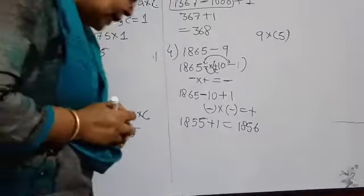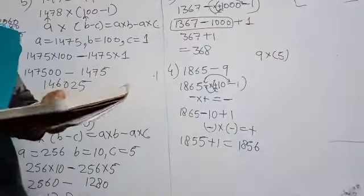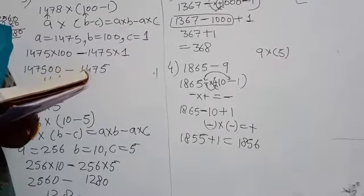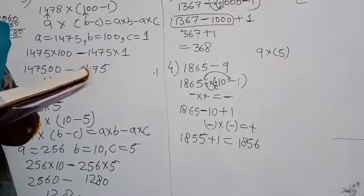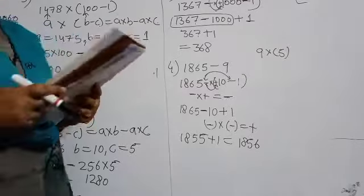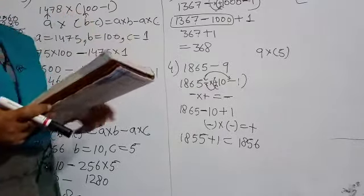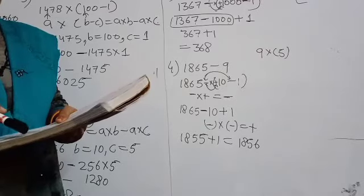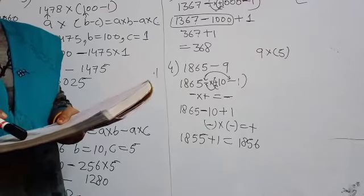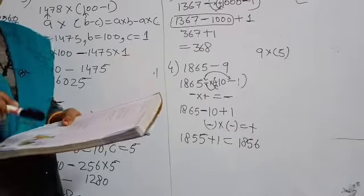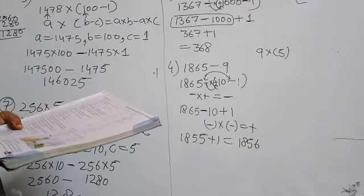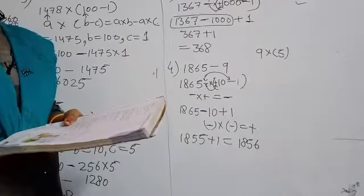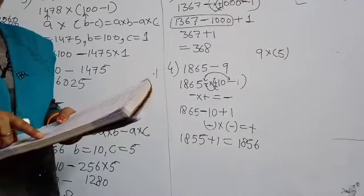I am guiding you on how to do it. Question number 6 is 1271 multiplied by 99. What will you write for 99? You will write 1000 minus 1, and then use the distributive property the same way I used it in question 5. Question number 8 is 7890 into 25, and 25 can be written as 100 divided by 4.